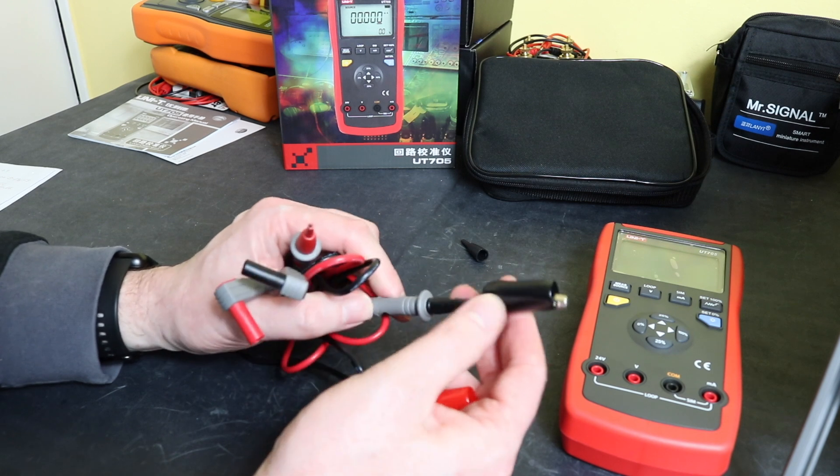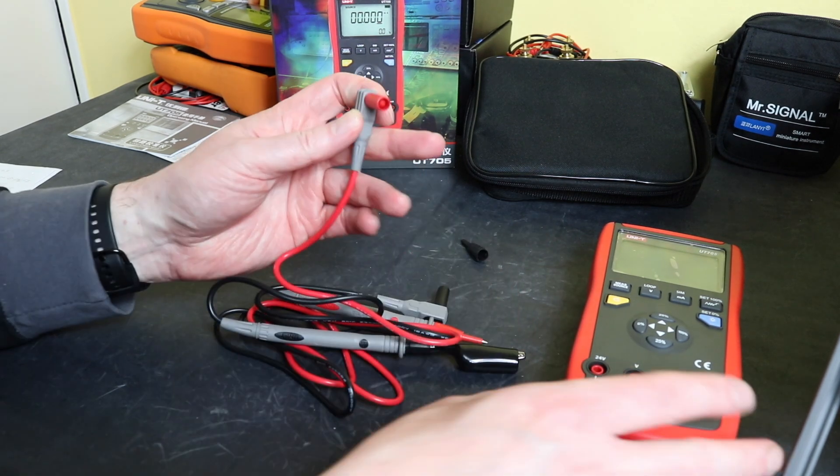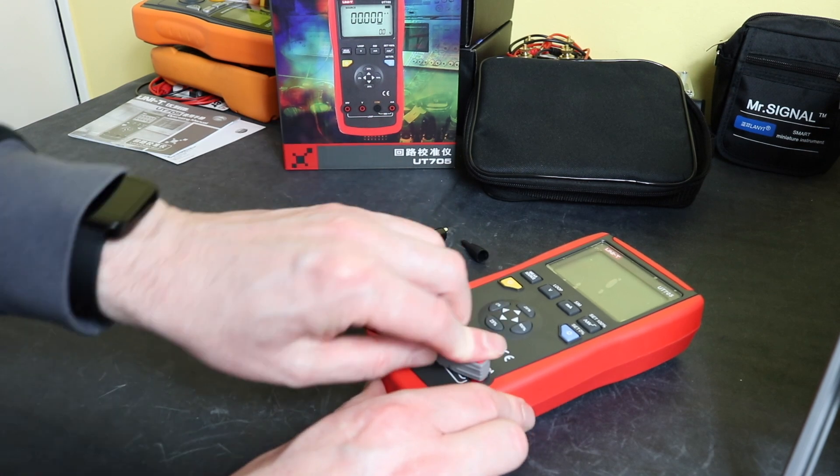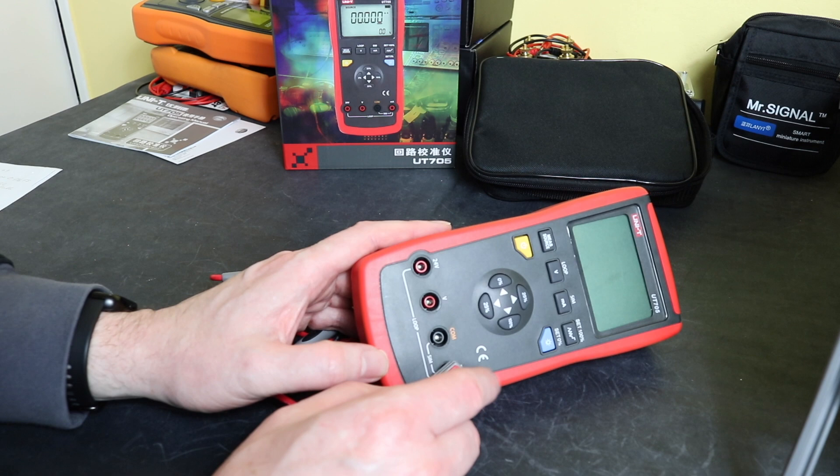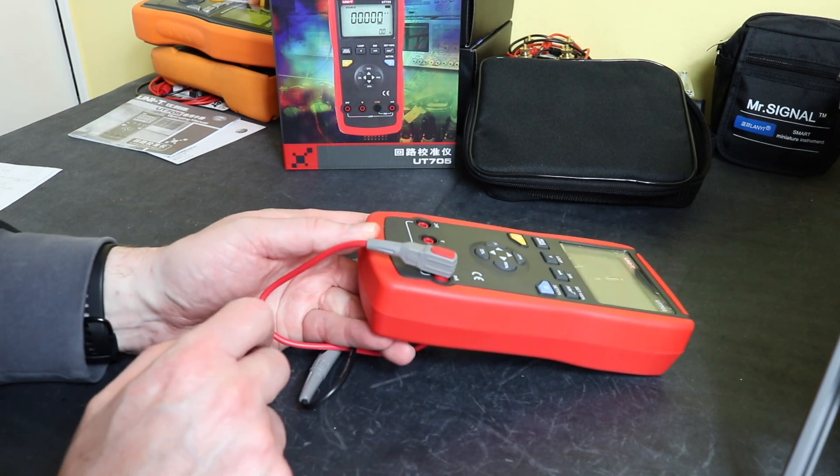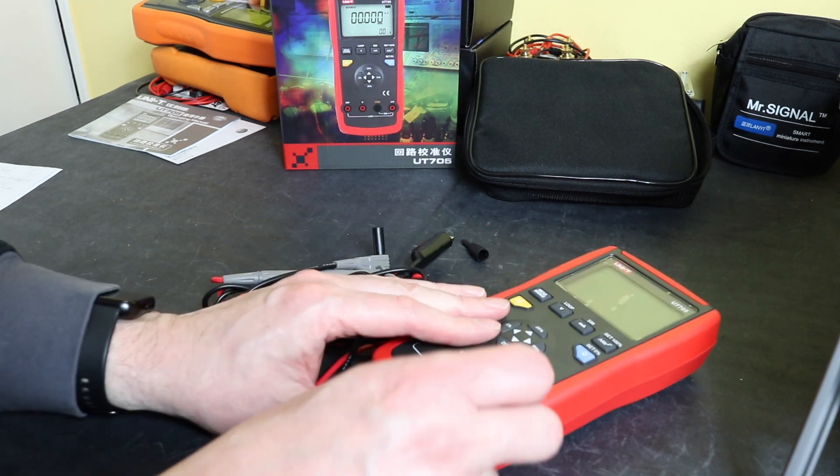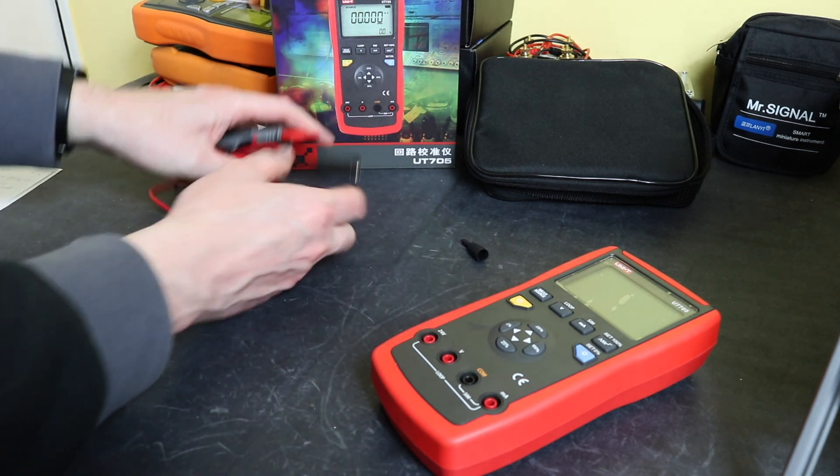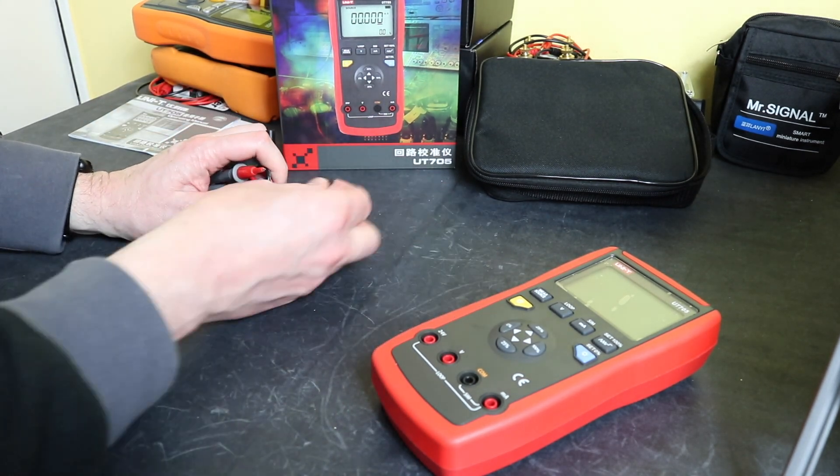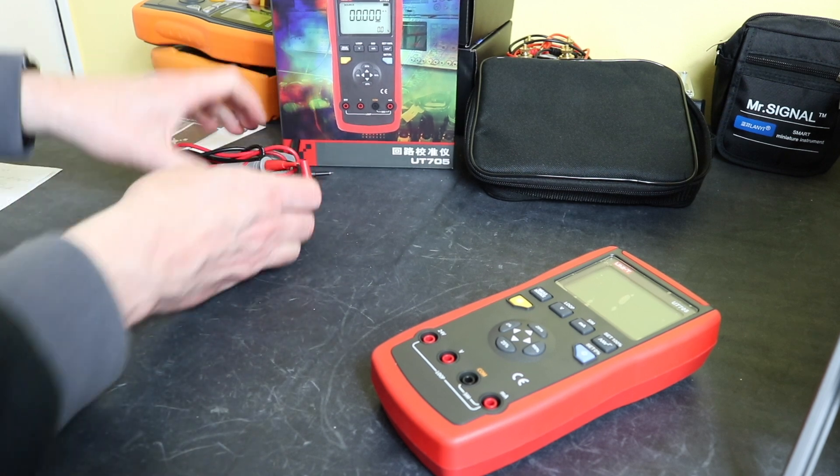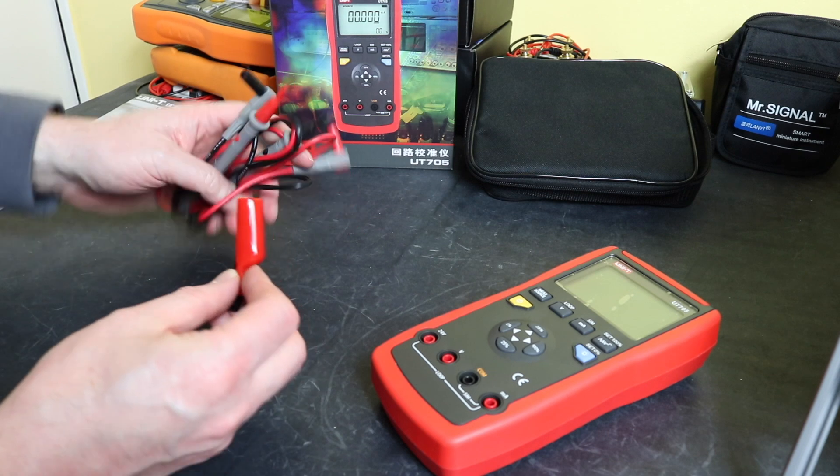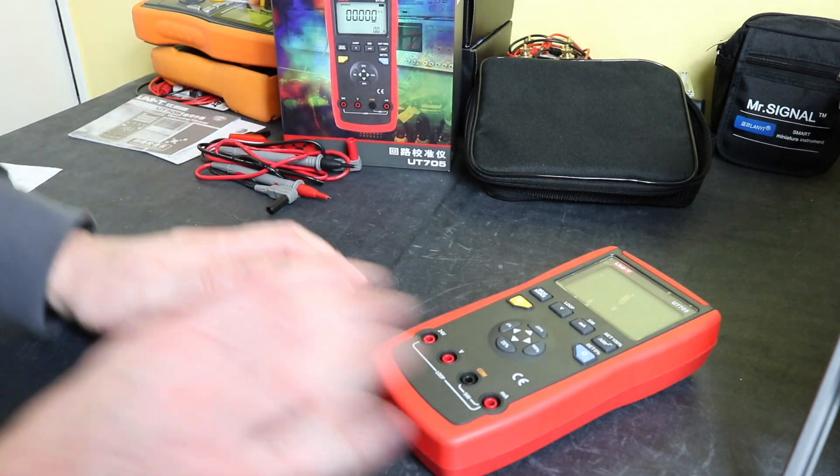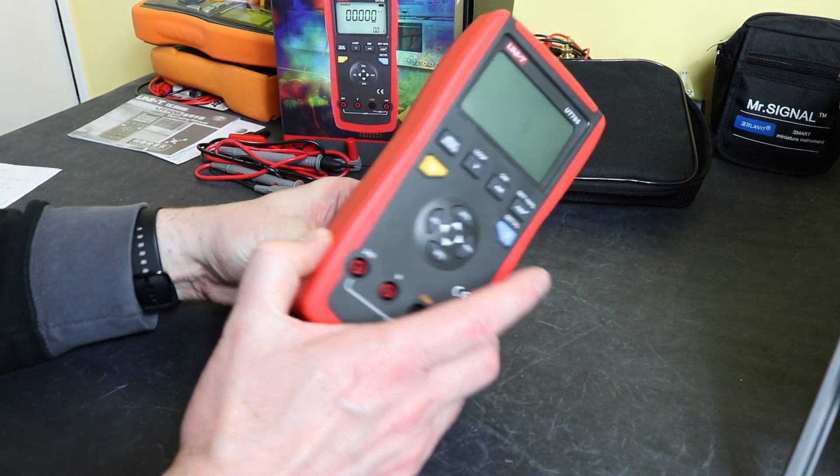Fairly basic with what you get inside the instrument. They do connect fully inside the actual sockets on the instrument itself, so all good in that respect. Everything's just red and black: red and black croc clips, red and black leads, and that's all you get. That leaves us with the meter.